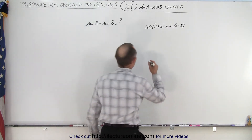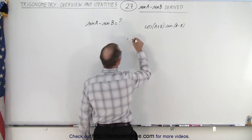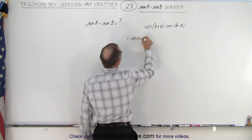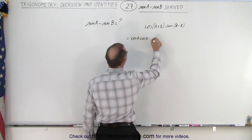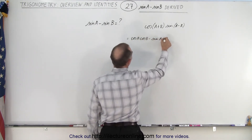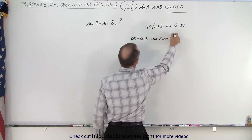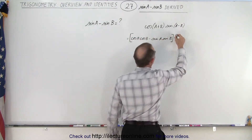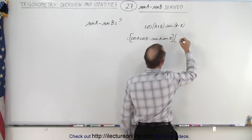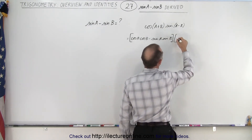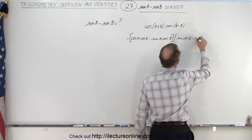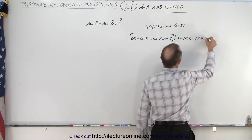The cosine of a plus b is equal to the cosine of a cosine of b minus sine a sine b. And we're going to multiply that times the product of the sine of a minus b, which is sine a cosine b minus cosine a sine b.